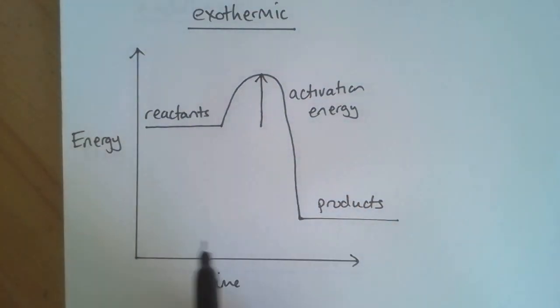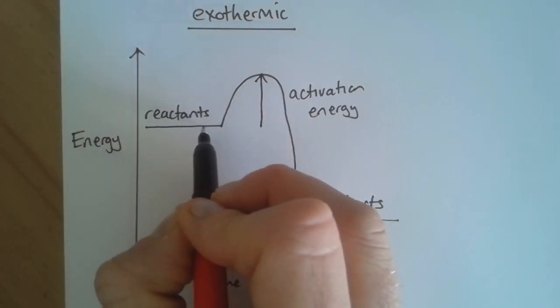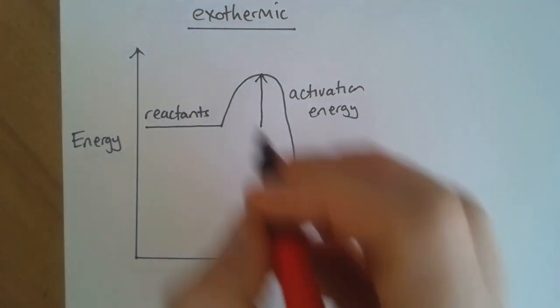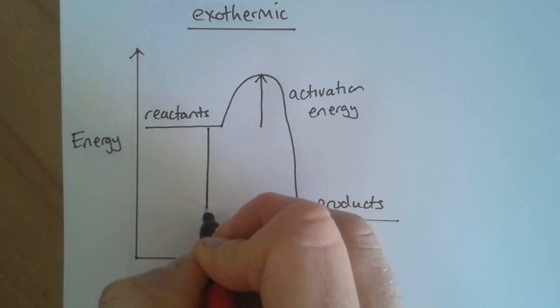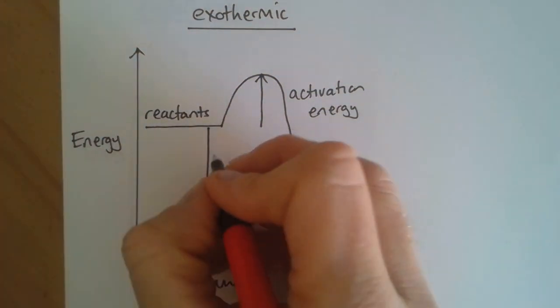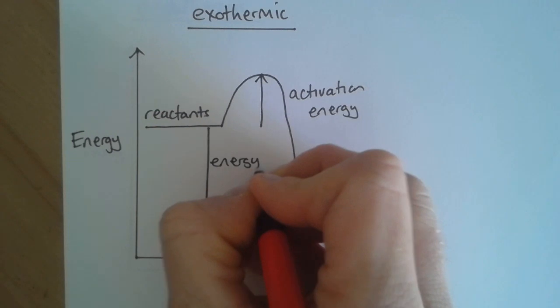We can also show the change in energy for the reaction. That's the distance from the line of the reactant down to the line of the product. So we draw an arrow down here. And this is the energy change of the reaction.